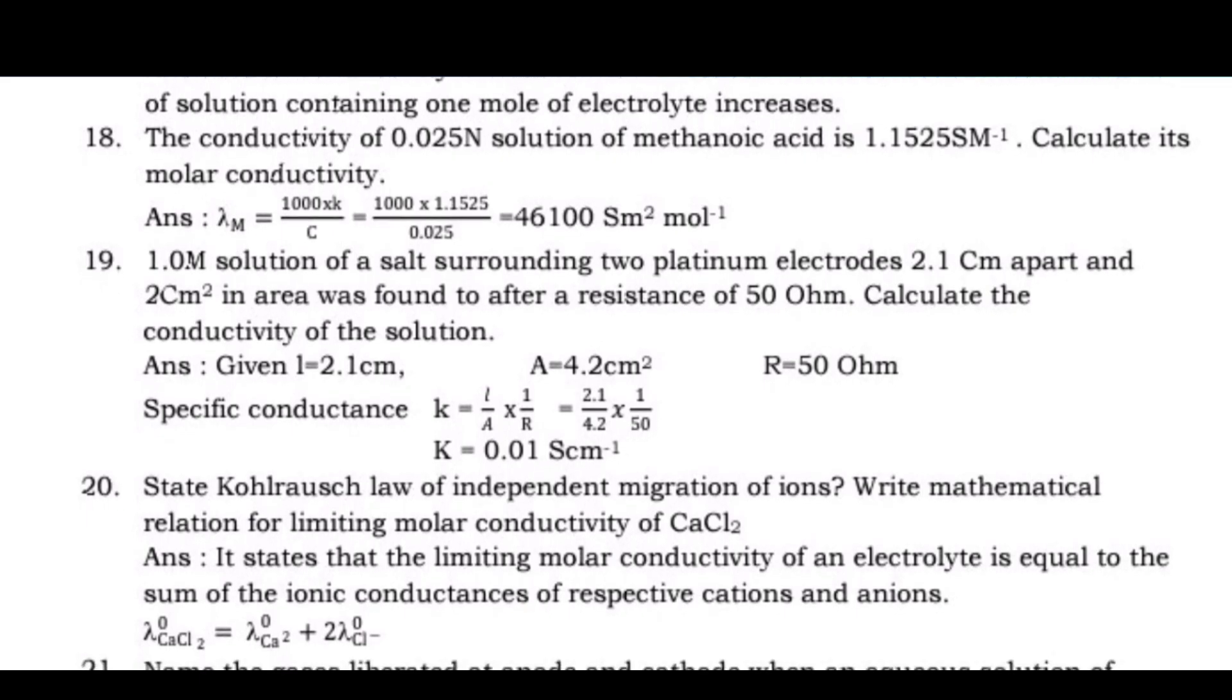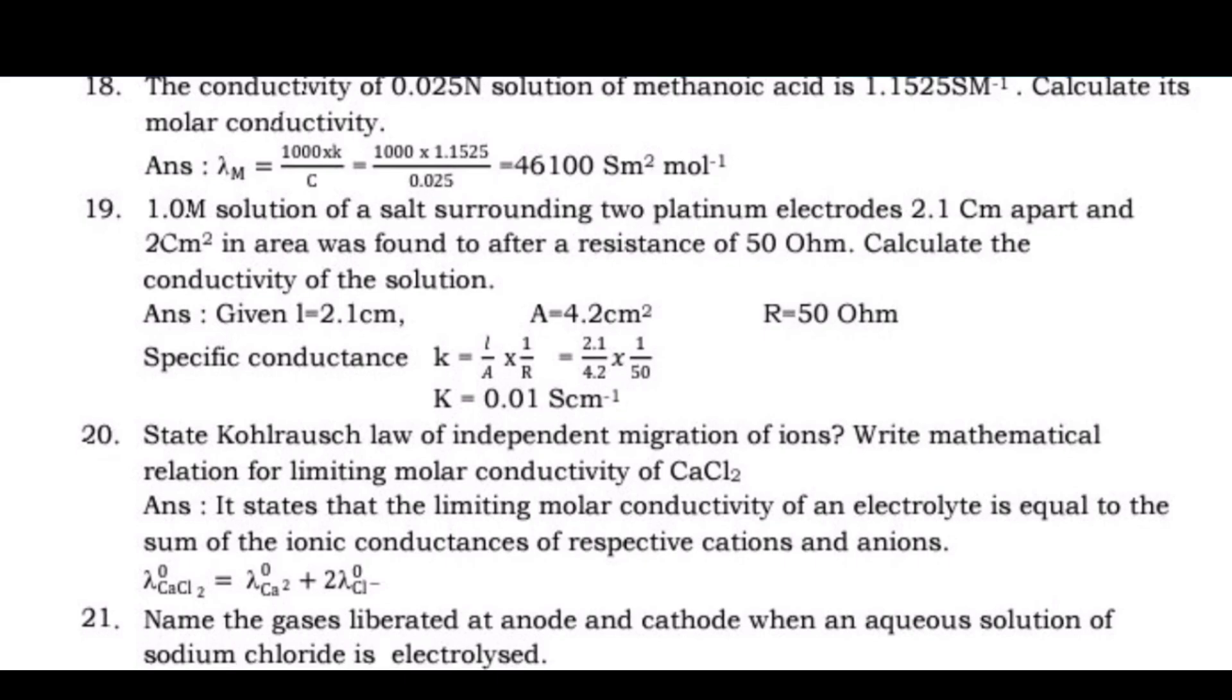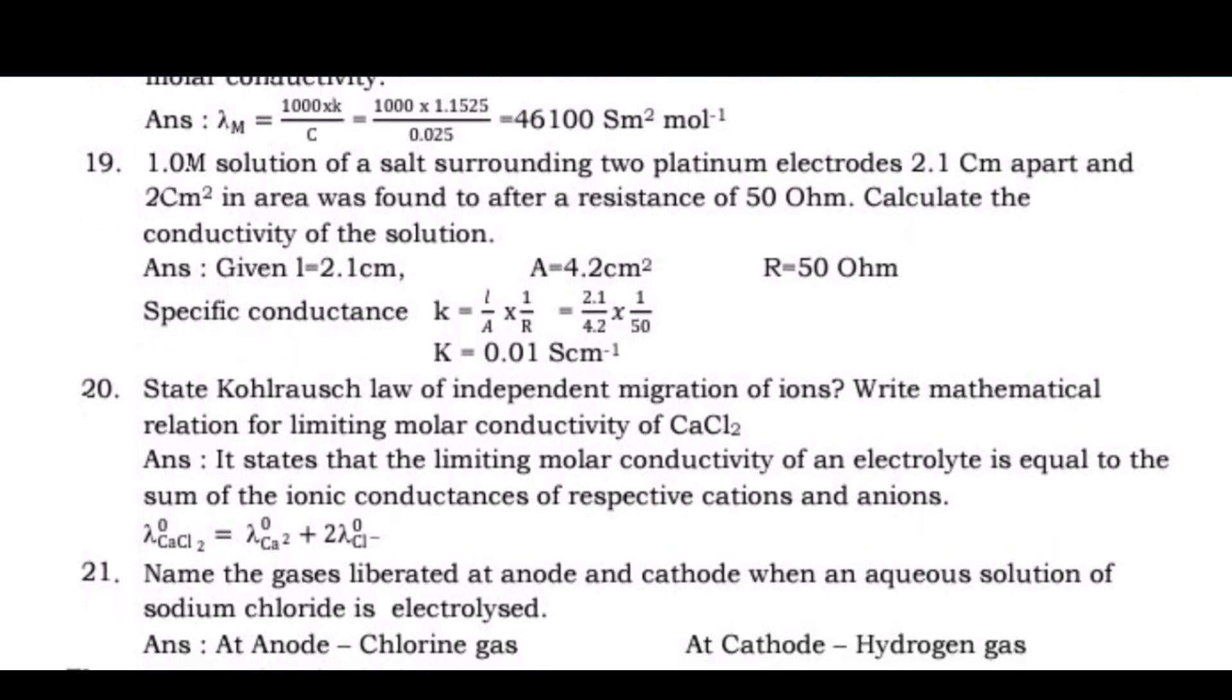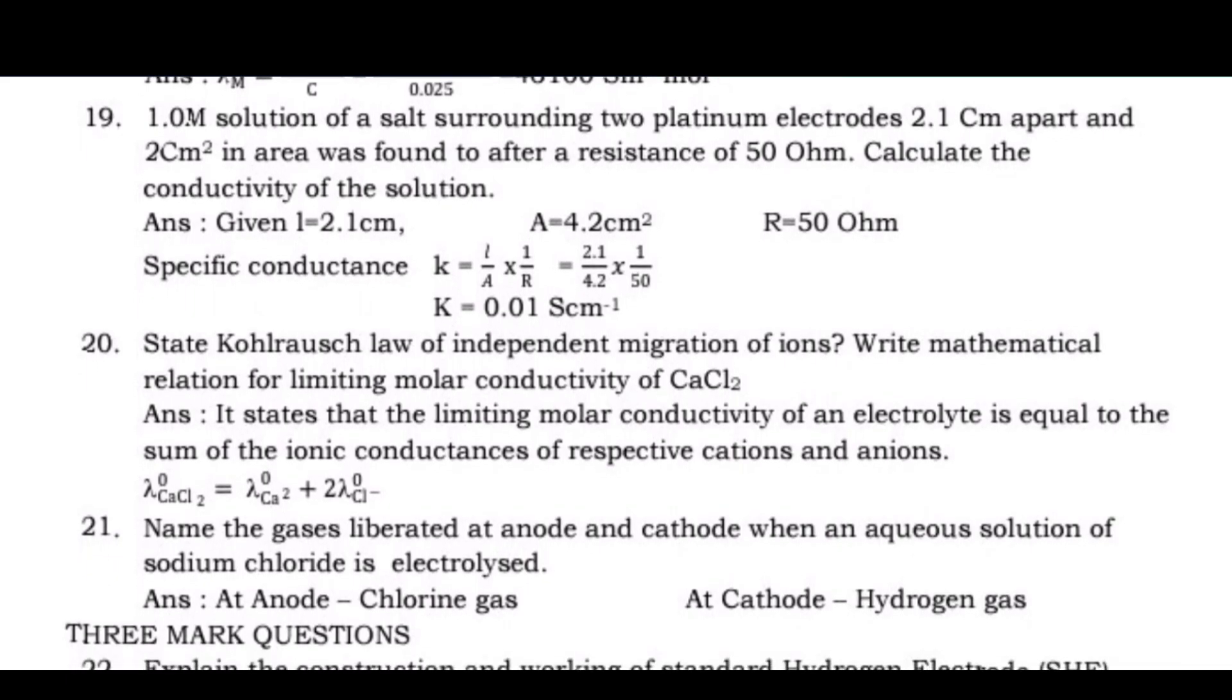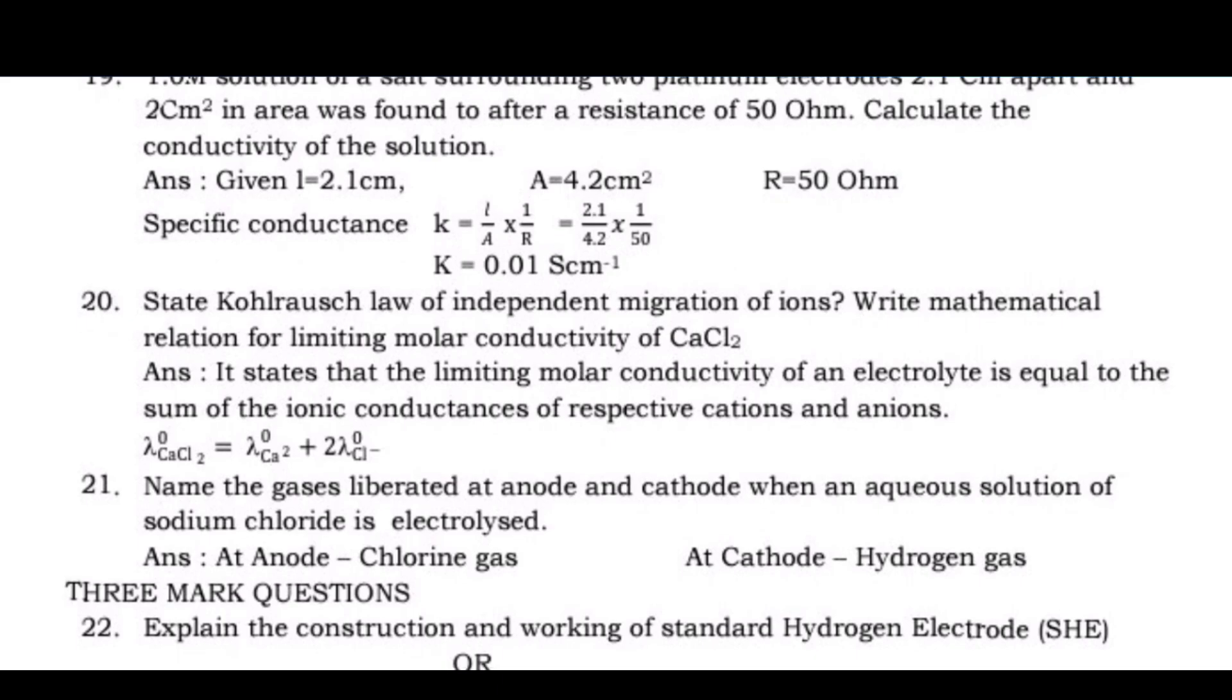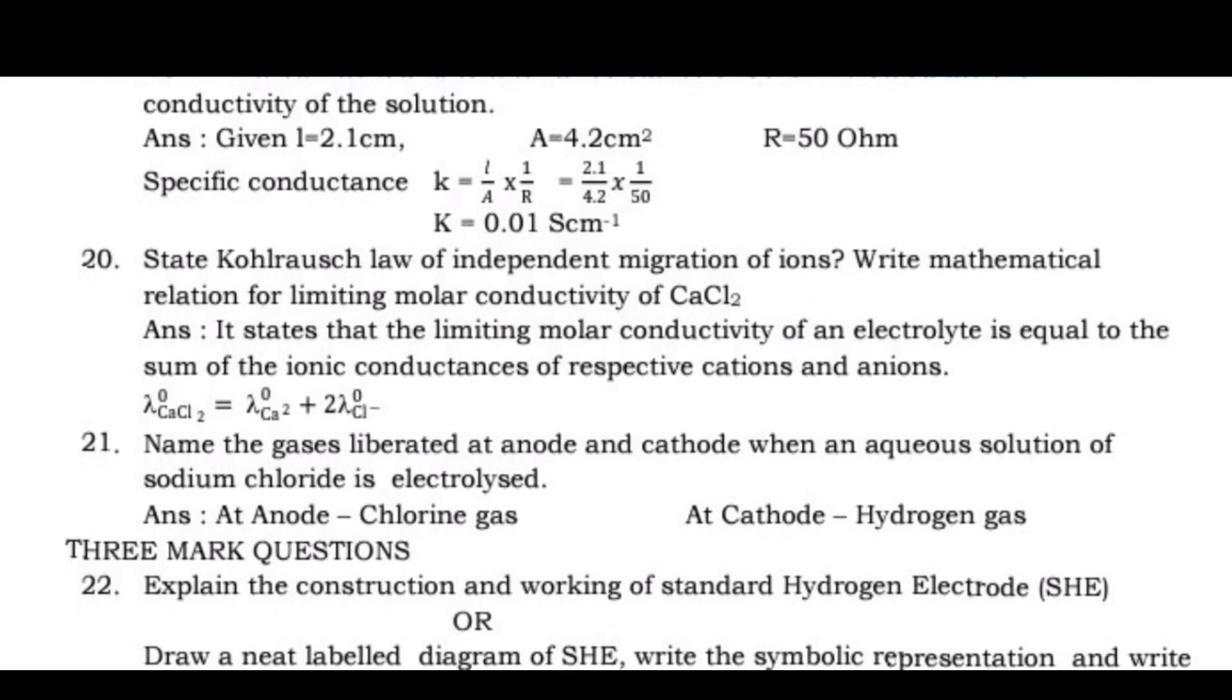Question 19: 1.0M solution of a salt surrounding 2 platinum electrodes 2.1cm apart and 2cm² in area was found to offer a resistance of 50 ohm. Calculate the conductivity of the solution. Question 20: State Kohlrausch law of independent migration of ions. Write mathematical relation for limiting molar conductivity of CaCl₂.